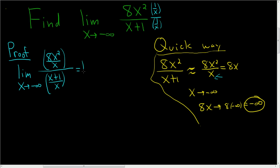This is equal to the limit as x approaches negative infinity. And let's see. So in the numerator here, we're just going to get 8x. And then here, this is x over x. So this is 1 plus 1 over x.